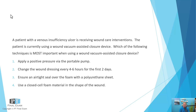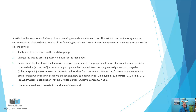The correct answer is option C — ensuring an airtight seal over the foam with a polyurethane sheet. A wound VAC, or vacuum-assisted closure device, is most effective when you have an airtight seal over the polyurethane sheet. You don't apply a positive pressure; rather, it's a negative pressure. Option one — apply positive pressure — is incorrect. You would want to apply a negative pressure via the portable pump.